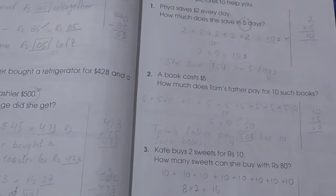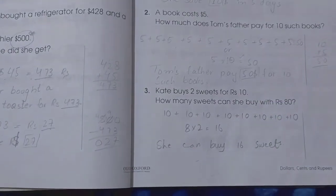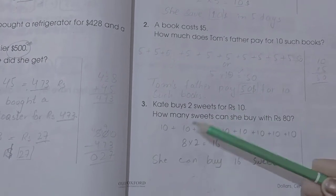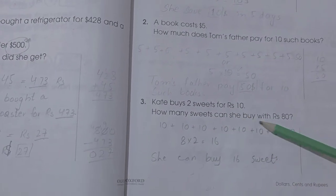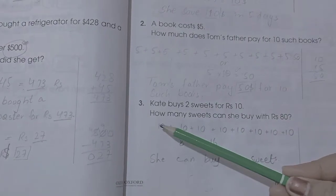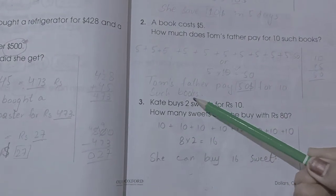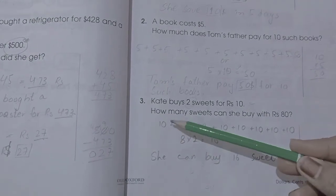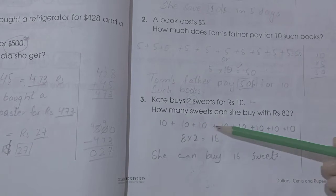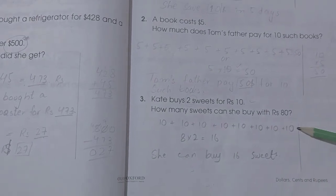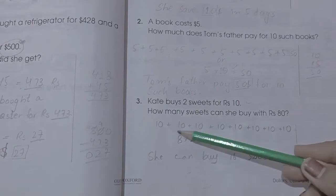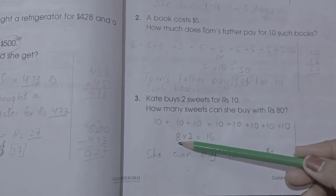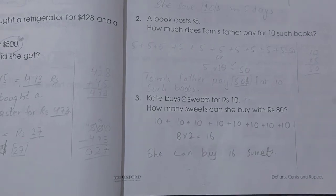Kate buys two sweets for 10 rupees. How many sweets can she buy with 80 rupees? Two sweets for ten. We write ten eight times, and when we add these eight times, it becomes 80. Or simply multiply 8 times 2 is 16. She can buy 16 sweets.